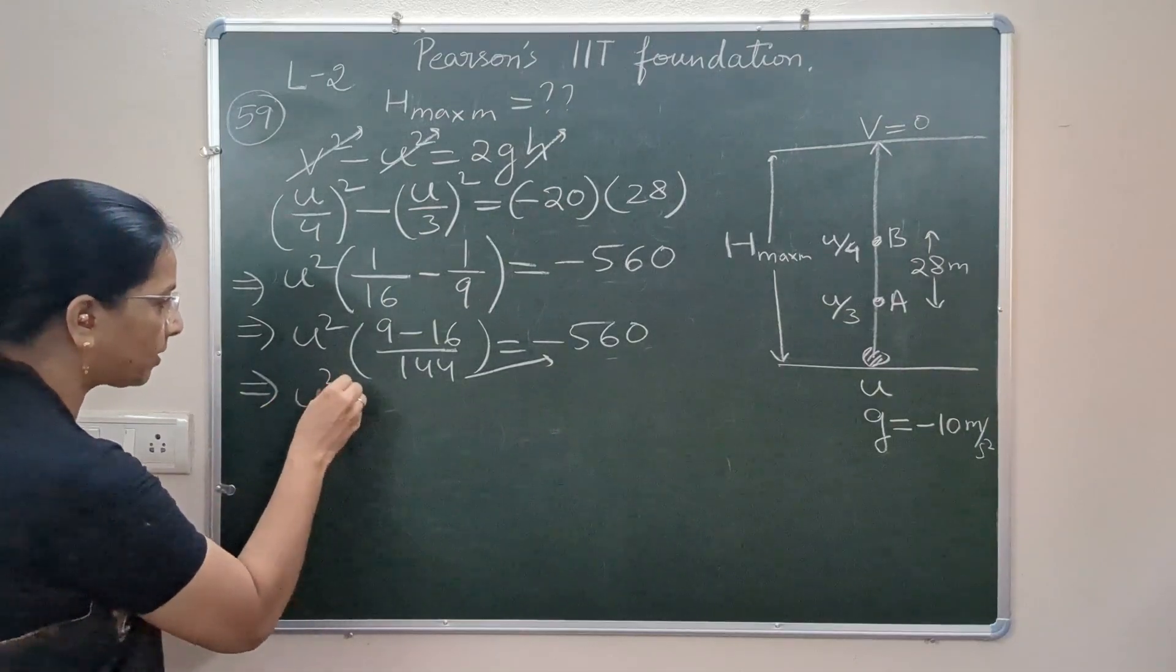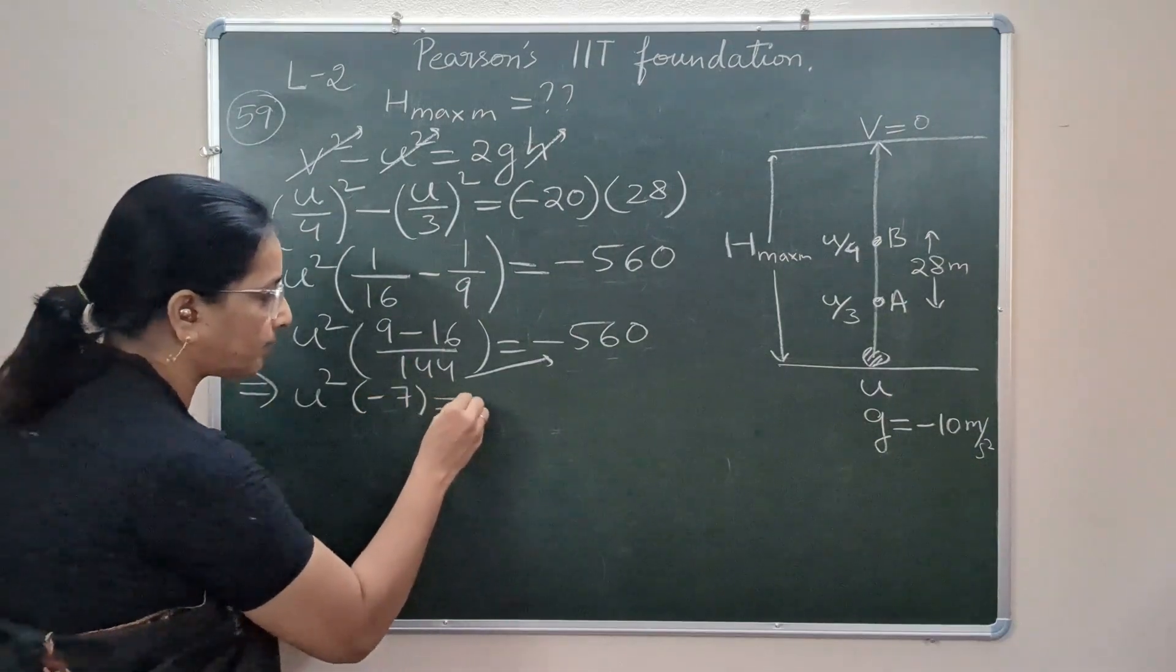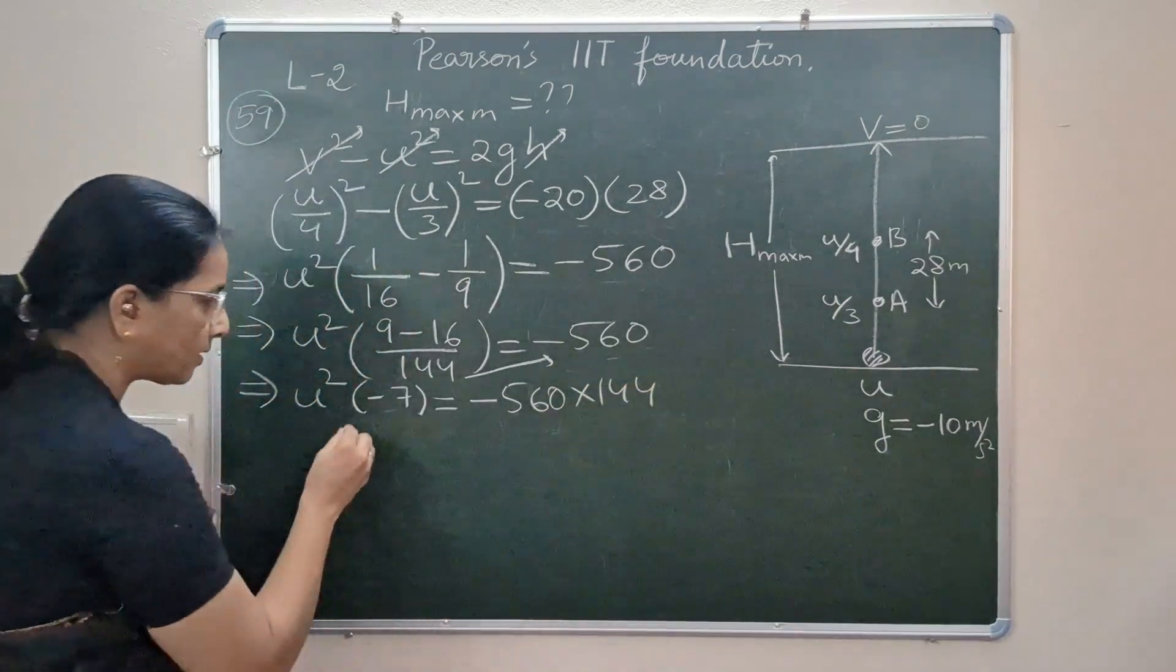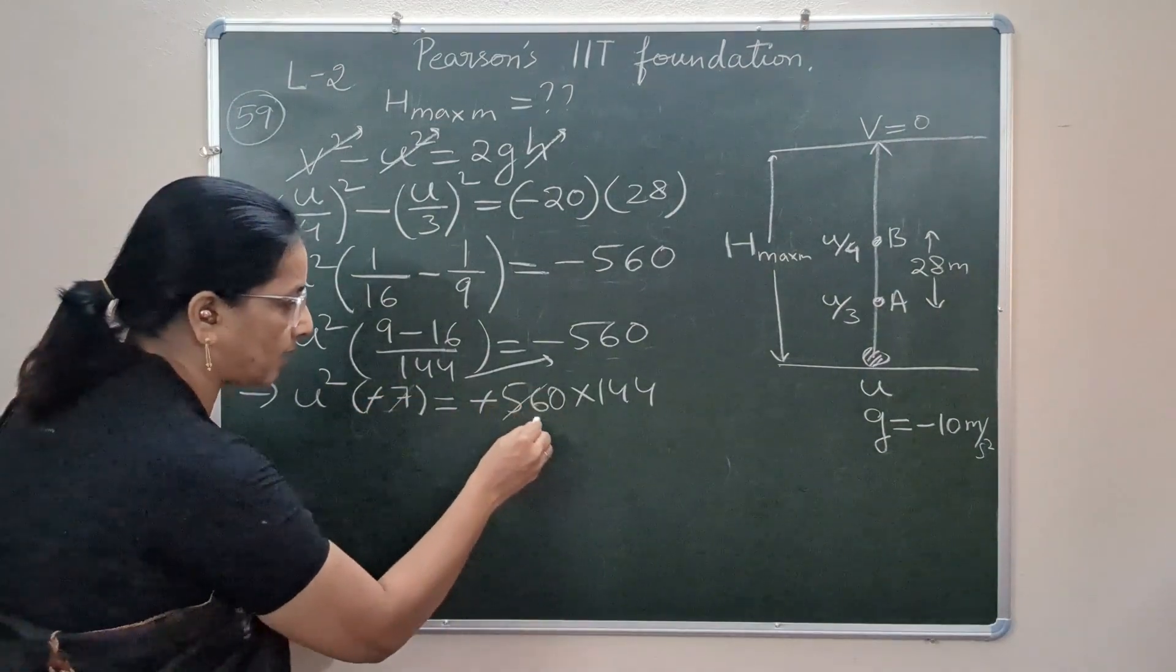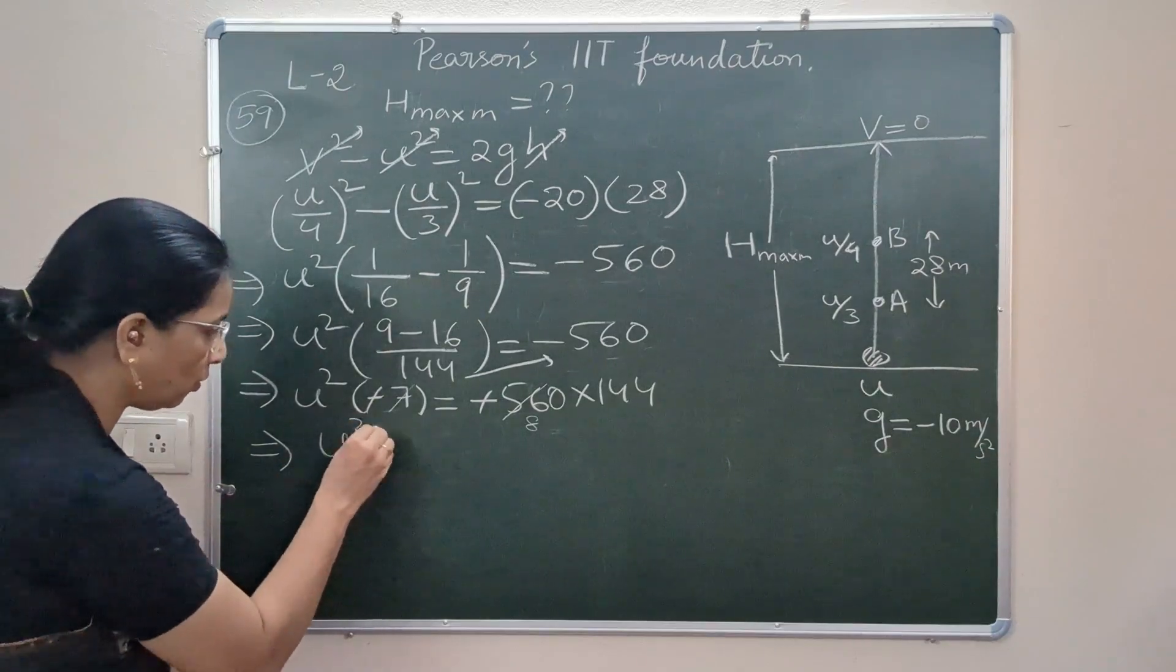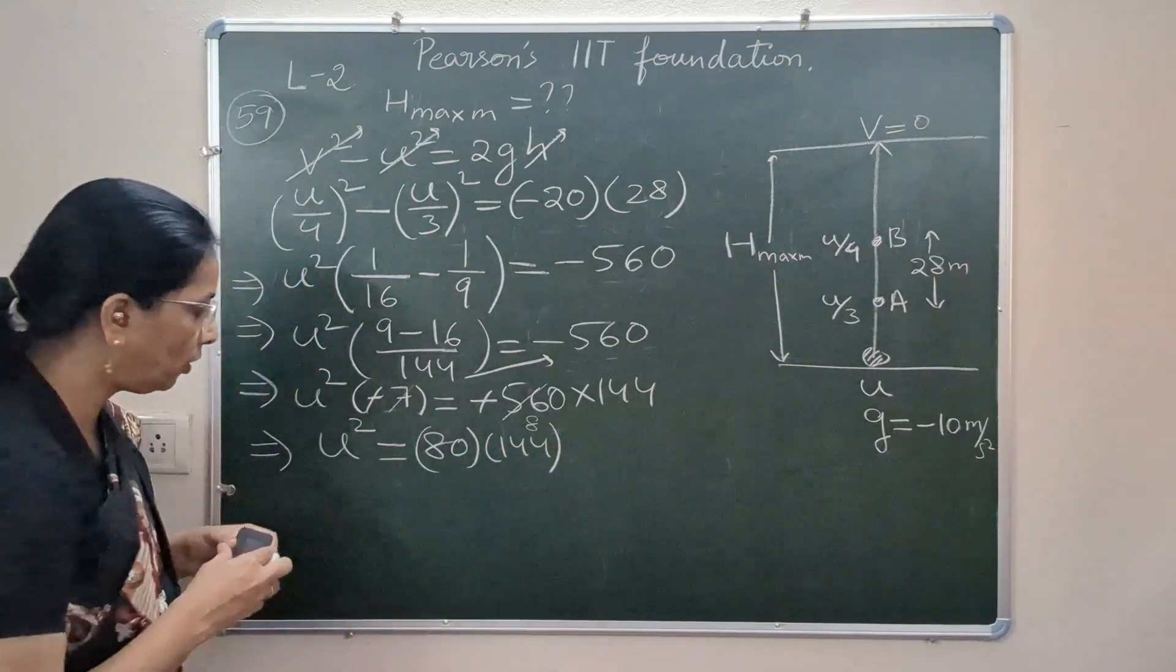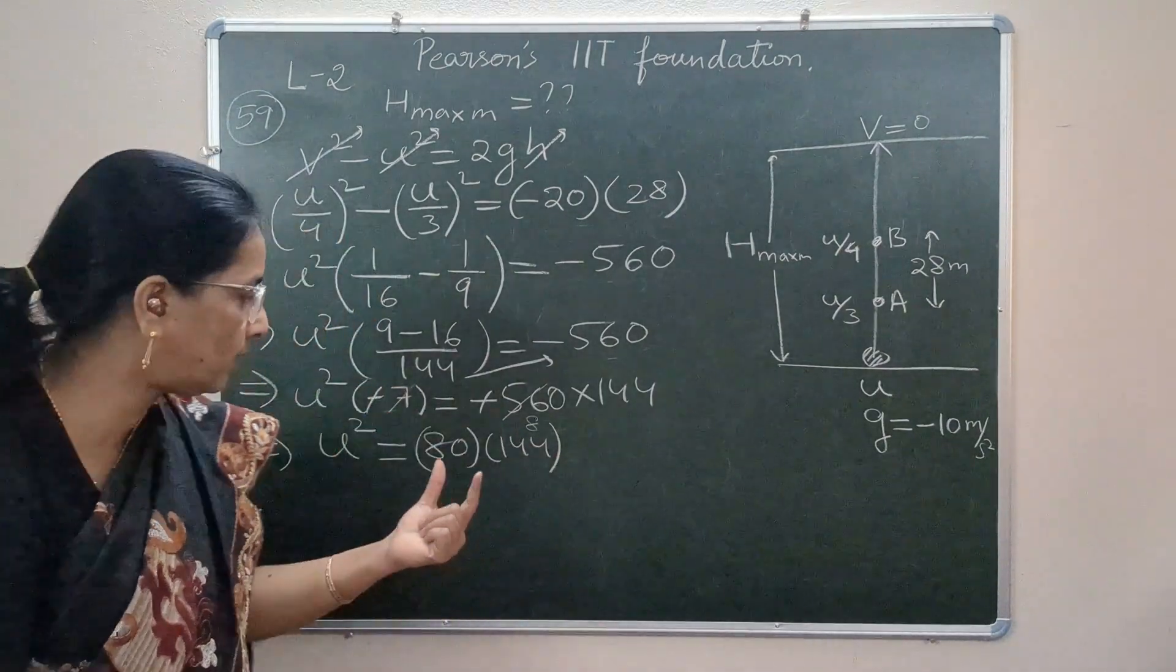So we have u² times minus 7 (9 minus 16 is minus 7) equals minus 560 times 144. So you can cancel this, and we can cancel 7 ones and 7 eights, 56, and we have initial velocity u² as 80 times 144. So u will be square root of this which we can put in prime factors and get the velocity.